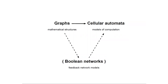There's also a third topic: so-called Boolean networks, which are feedback network models. Boolean networks are more directly related to cellular automata. They are types of graphs with additional structure where every node has one of two states — that's why they're called Boolean.